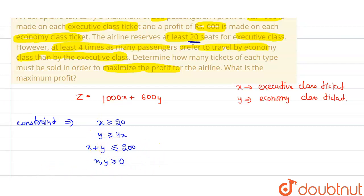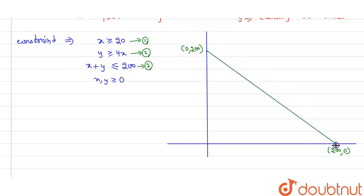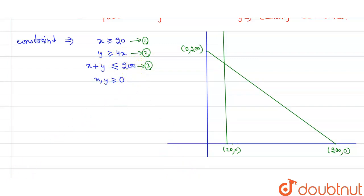We will now plot these constraints on a graph. For the line x plus y equals 200, putting x equal to zero gives y equals 200, giving point (0, 200), and putting y equal to zero gives x equals 200, giving point (200, 0). The line x equals 20 is a vertical line passing through x equals 20.